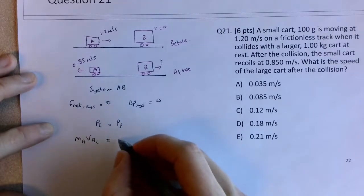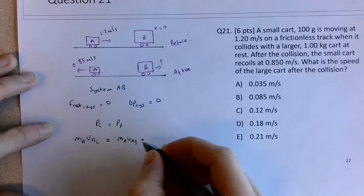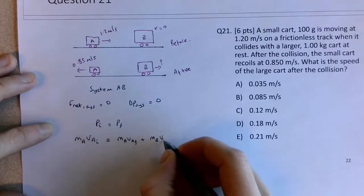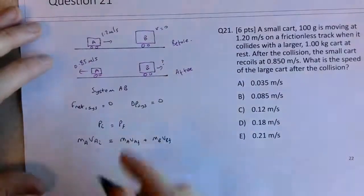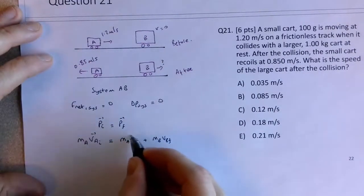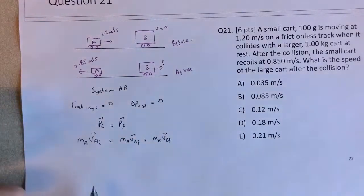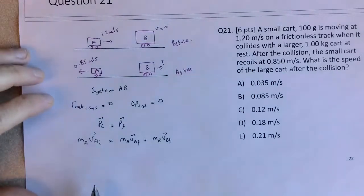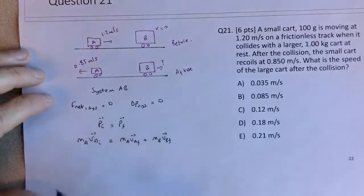It equals the final momentum of M_A V_A final plus M_B V_B final. These are technically vector quantities, and then I'll remove the vector quality and let's consider the signs in the next step. So we're looking for the final speed of V_B_F, so I'm going to group this term itself.